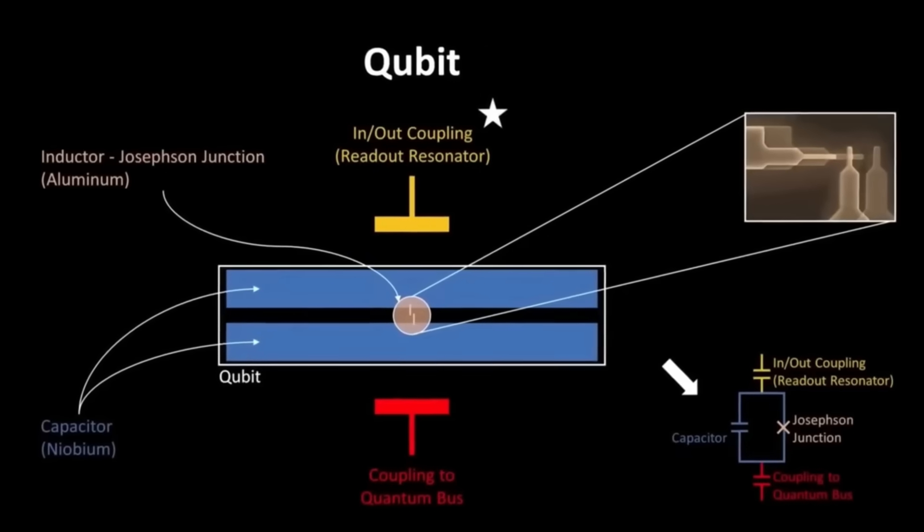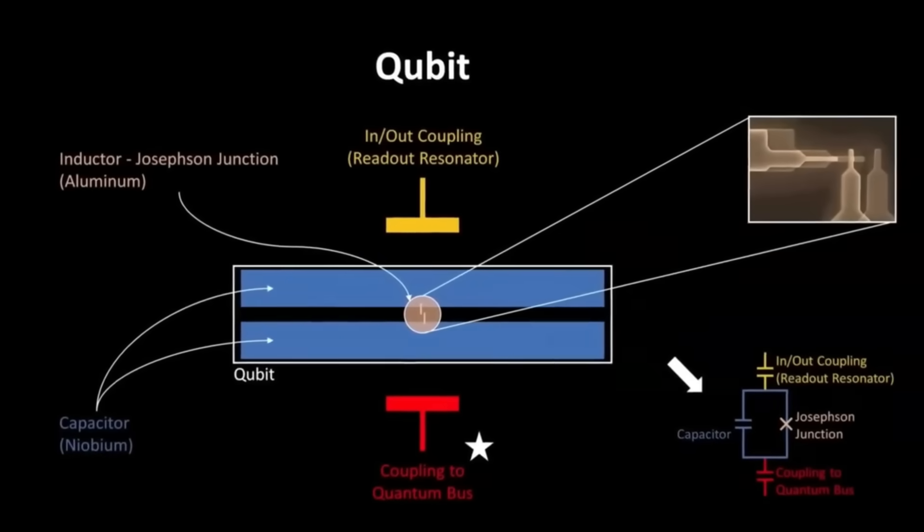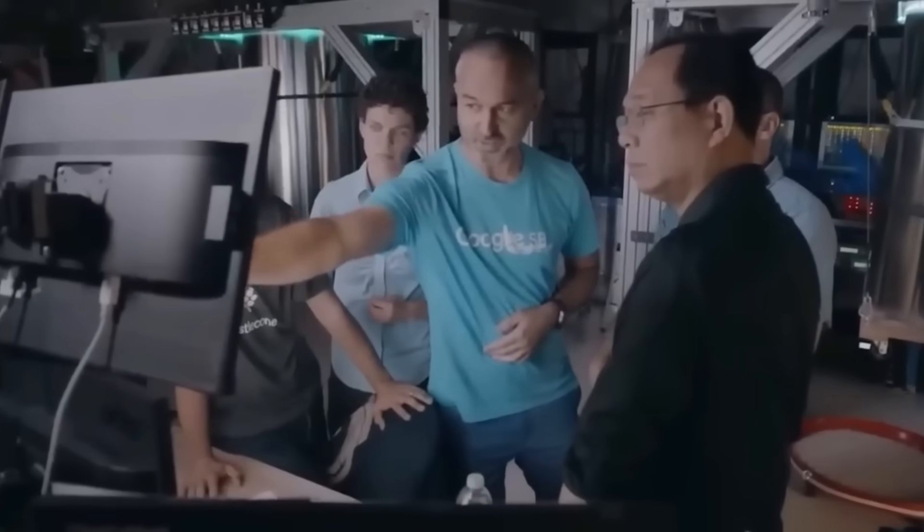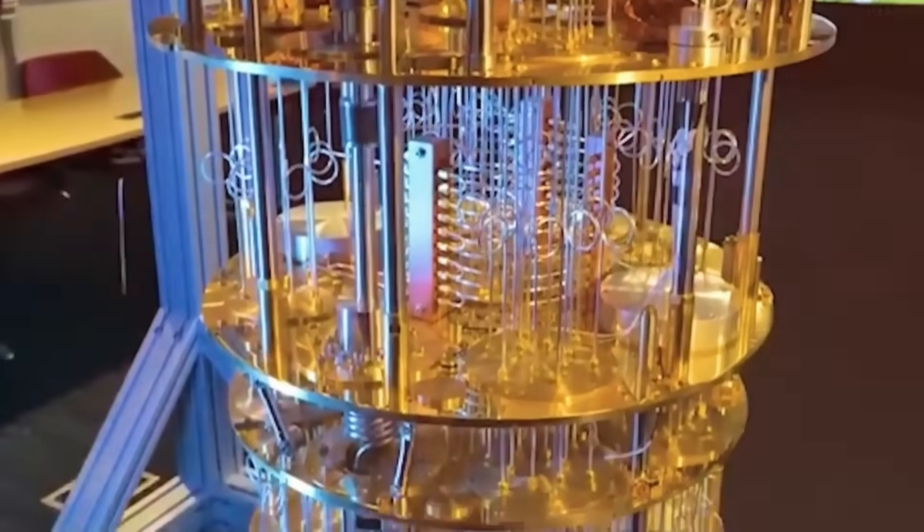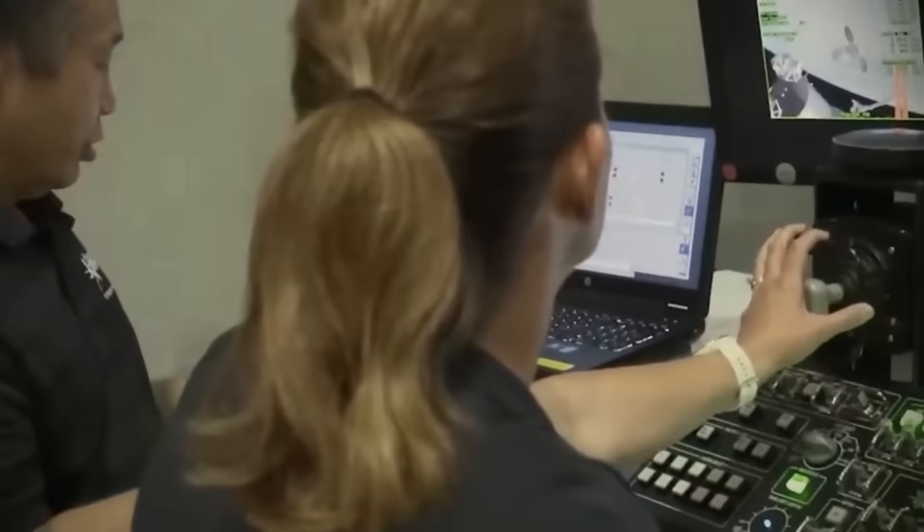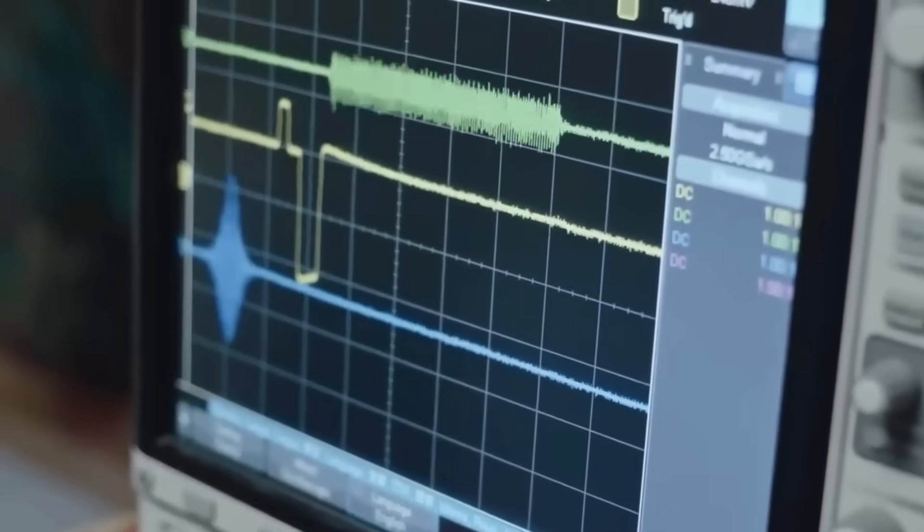Even quantum computers can't compute the uncomputable, though. They're faster, not magical. But Omega perfectly symbolizes the boundary between what can and cannot be known, the ultimate code. The third face, and the one governments are truly worried about, is the cryptographic Omega,